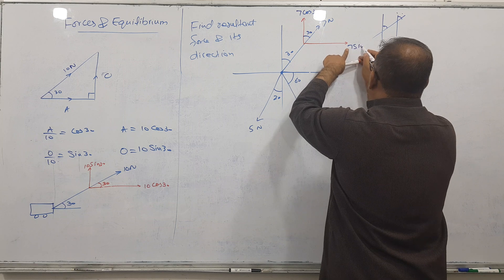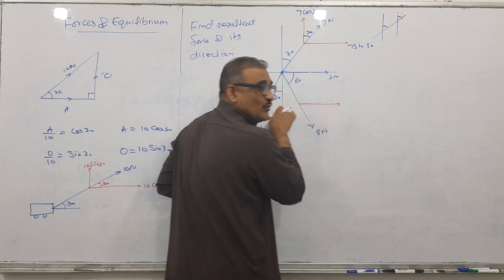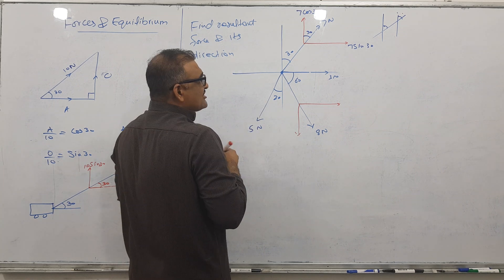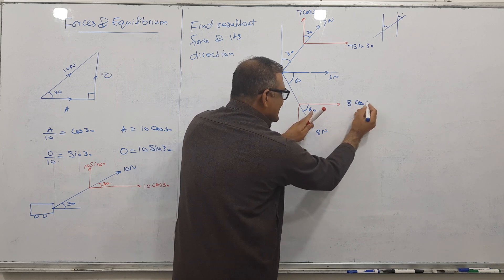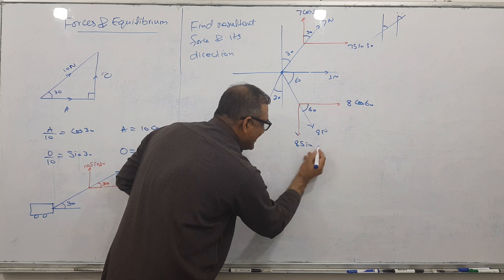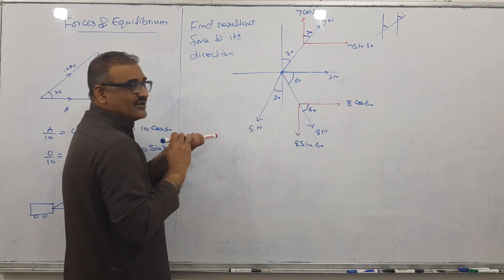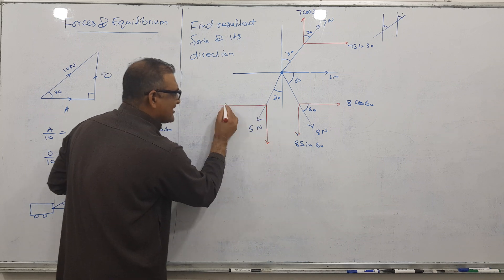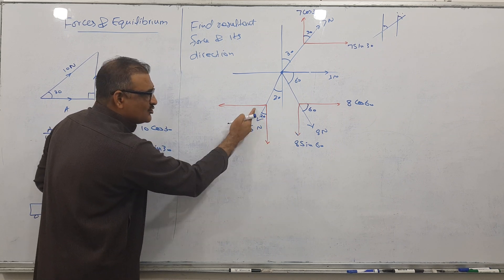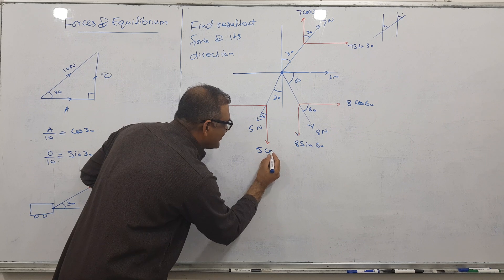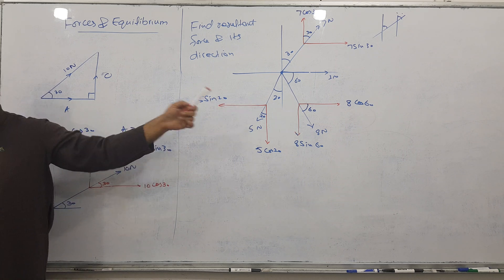Similarly here, one component parallel to x-axis and one parallel to y-axis. This 60 is here, angle given is cos, so 8 cos 60 and 8 sine 60. This force has 5 Newtons at angle 20 degrees, so angle is here acting. This is 5 cos 20 and 5 sine 20.